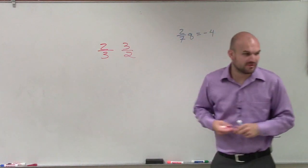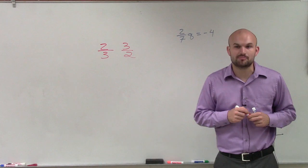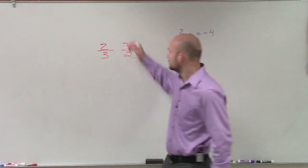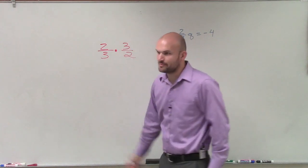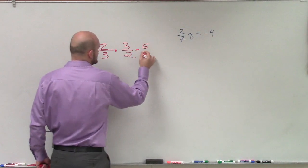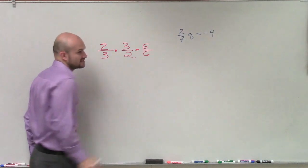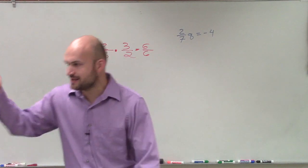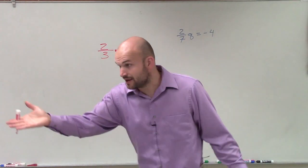Now, what happens if we multiply a number by its reciprocal? Let's take a look. So if I multiply a number by its reciprocal, I'm going to be multiplying fractions. That means I multiply 2 times 3, which is 6, over 3 times 2, which is 6. So 6 divided by 6 gives me a whole, 1.